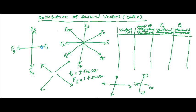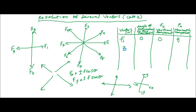Now how do we resolve F1? If you look at F1, F1 is on positive X. So we write F1. The angle of inclination of F1 to the horizontal is zero degrees. The Y component — it doesn't have a component anywhere except along positive X — so the vertical component of F1 is zero, and the horizontal component is positive F1 because it's on positive X.